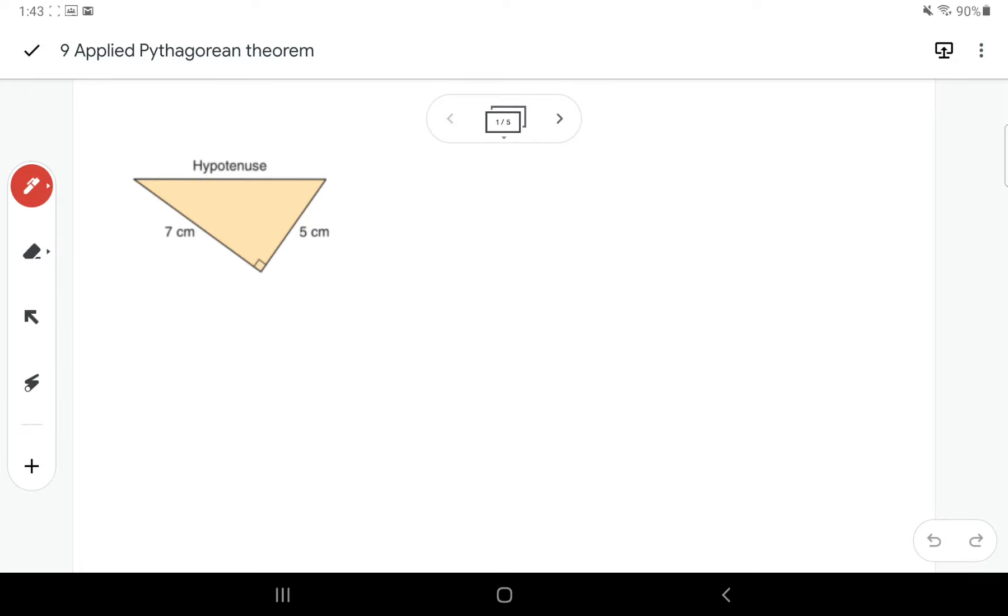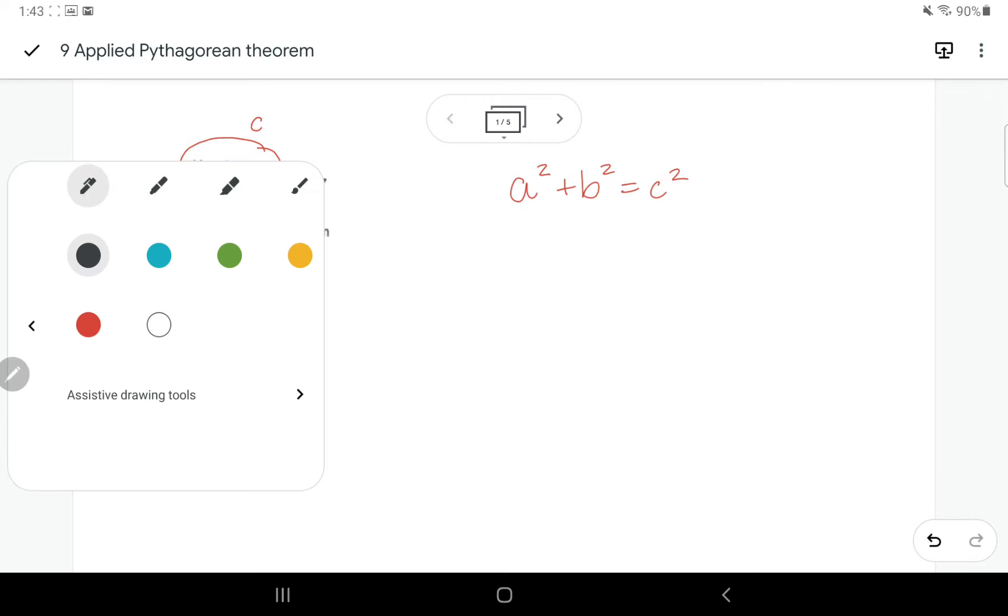So the first question here is to find the hypotenuse. And the hypotenuse is the side on a right-angled triangle. You always want to look for that square box in the corner that's the right angle. And I like to make an arrow, and this is always going to point to your C.